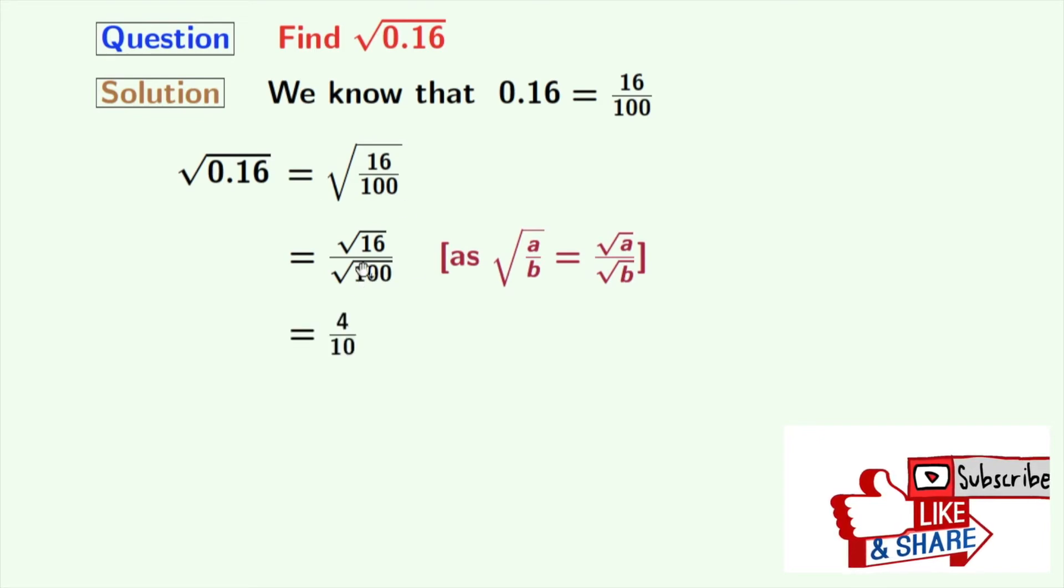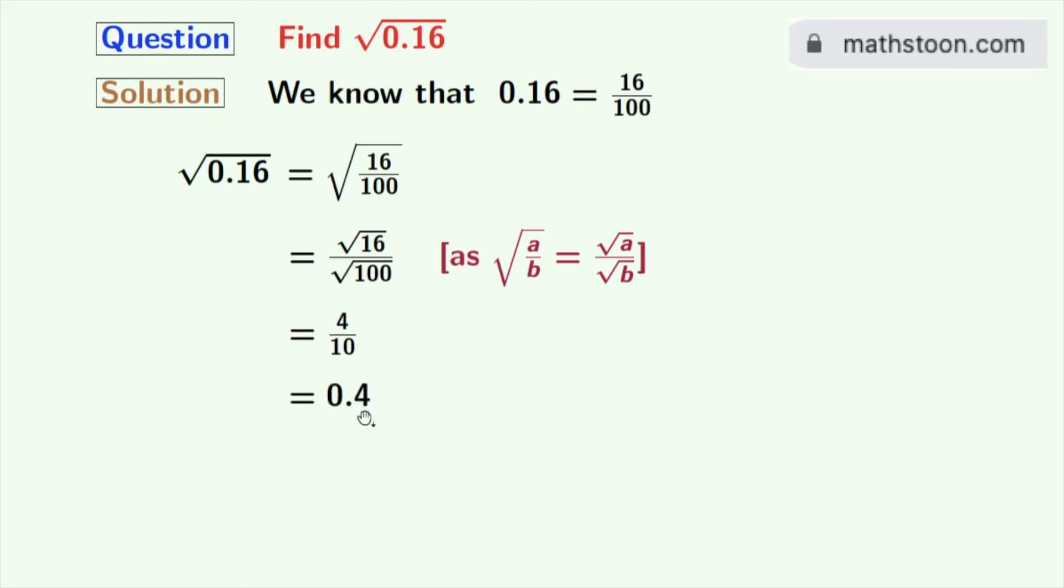Now we will again express this fraction as a decimal number. Doing so we get 4 by 10 equals 0.4. So finally, we get square root of 0.16 equals 0.4, and this comes out as our final answer.